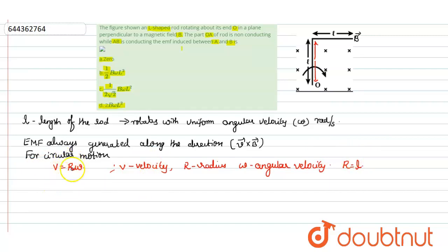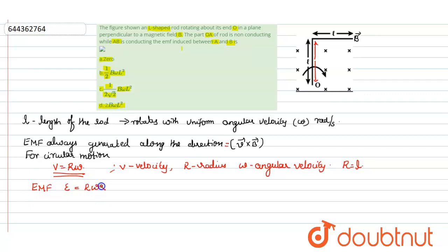So the EMF equation becomes: EMF = v cross B. Substituting v = r omega, we get EMF = omega r cross B, which can be written as omega times r cross B. We can consider this as equation 1.